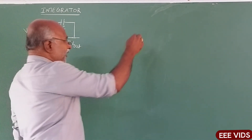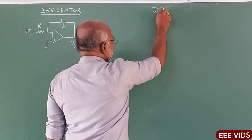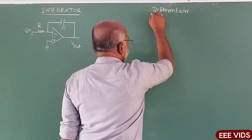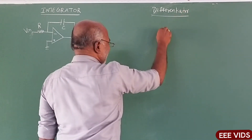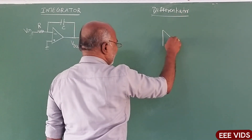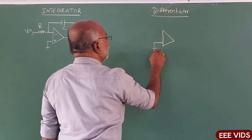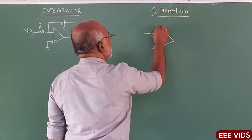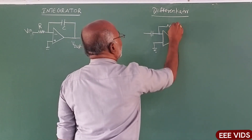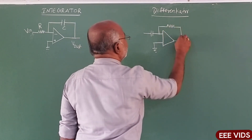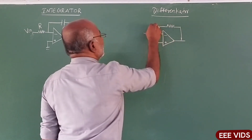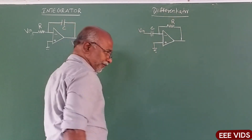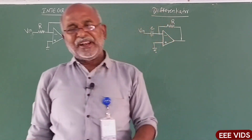It is a Differentiator. So, apply now. Differentiator. In this circuit, instead of using the capacitor in that way, we use capacitor-resistance interchange. At the RC now, V in is applied. Integrator, at the end of the circuit. Integrator. Differentiator.